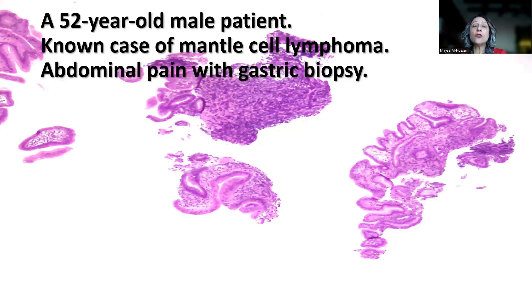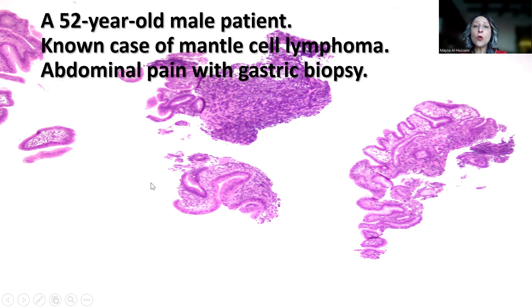This is a case of a 52-year-old male patient who is a known case of mantle cell lymphoma. He started to complain of abdominal pain, for which he underwent upper and lower endoscopy and obtained a gastric biopsy. As you can see here from the low-power magnification, several fragments of gastric mucosa, one of which showed this lymphoid aggregate.